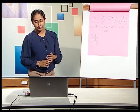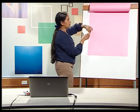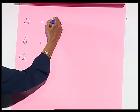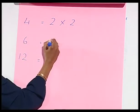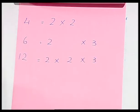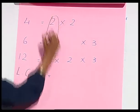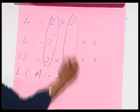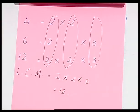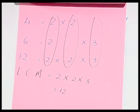Now if you have to find the LCM of 3 numbers — 4, 6 and 12 — we proceed similarly. So 4 is 2 times 2, 6 is 2 times 3, and 12 is 2 times 2 times 3. The LCM is therefore 2 times 2 times 3, which is 12. So the LCM of 4, 6 and 12 is 12.